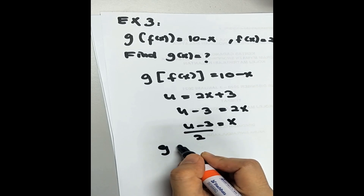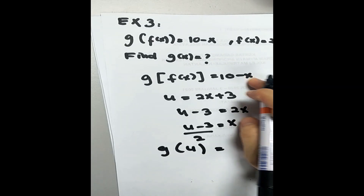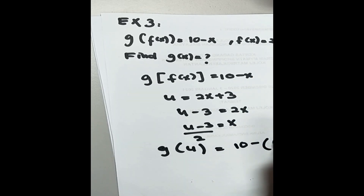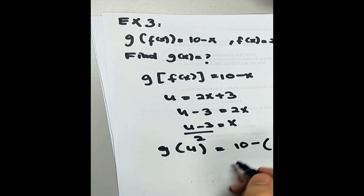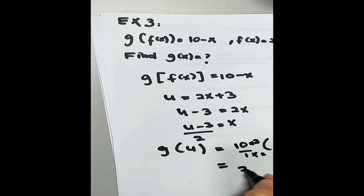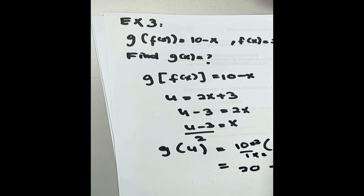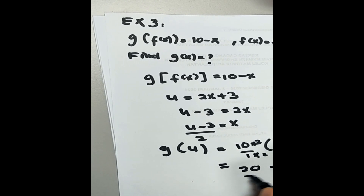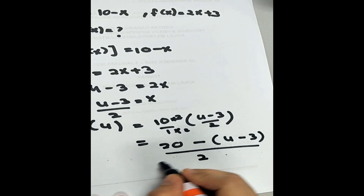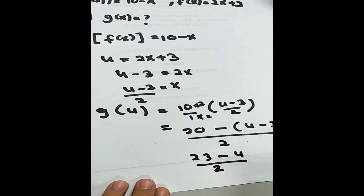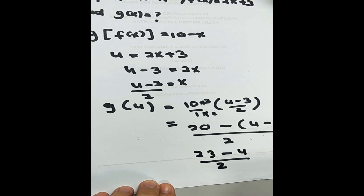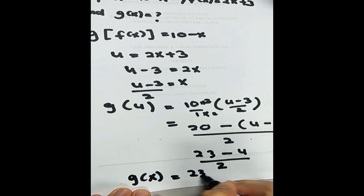In terms of u, g(u) means substituting x = (u minus 3) over 2 into the expression: 10 times (u minus 3) over 2. Making the same denominator: (20 minus (u minus 3)) over 2, which gives (20 plus 3 minus u) over 2 = (23 minus u) over 2. The question asks in terms of x, so we replace u with x. Therefore, g(x) = (23 minus x) over 2.